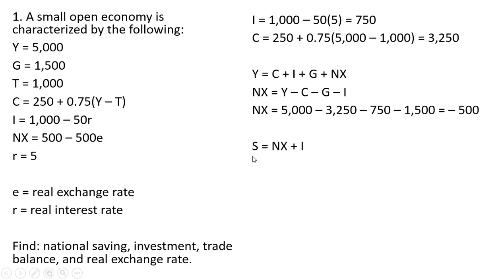And national saving in an open economy is just going to be net exports plus investment. In a closed economy, you might recall that national saving equals investment. With an open economy, it will equal this result here. And so plugging in net exports of minus 500 and investment spending of 750, national saving in this economy is 250.